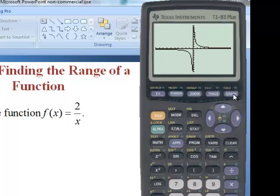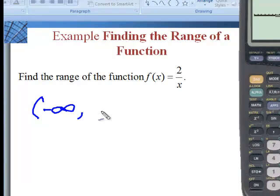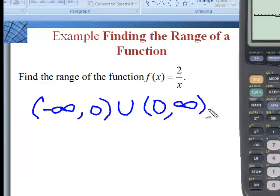So on our virtual graphing calculator here, I'm going to go to the y equals, and I'm going to put in this function. So it's 2 divided by, and I'll use this x t theta n button, which in this mode will give me x, and then I will graph it. And what this shows me, because we're looking for the range, we're looking for the y's, every y value except for zero is included. This graph never hits the zero. So if we're listing the range, what we have is x goes from negative infinity to zero, does not include zero, and then the union, picking up zero on the other side, does not include zero, and goes to positive infinity. And that's the range of that function.